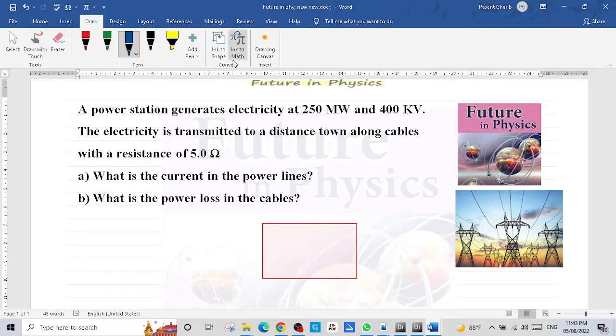First of all, we write the given. Here the given is the power 250 megawatt, so the power equals 250 megawatt. From megawatt to watt, multiply 10 power 6. So it's 250 multiply 10 power 6 watt.